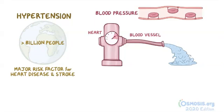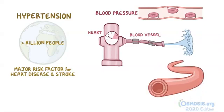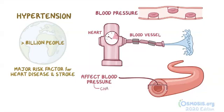If we squeeze the hose, narrowing the diameter, the pressure inside would be greater and the water will shoot out more strongly. This is similar to how the diameter of the blood vessels can affect blood pressure, which can change in response to different stimuli.